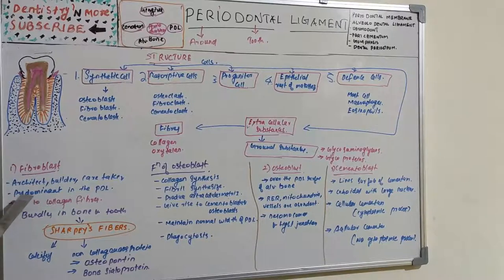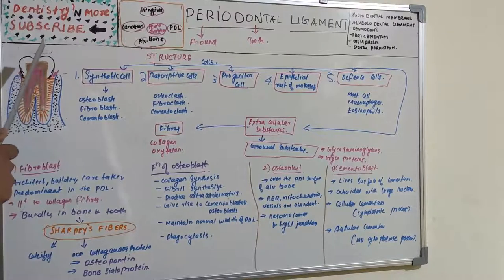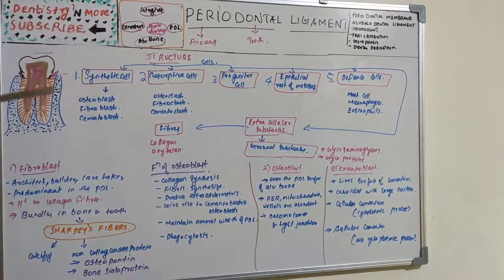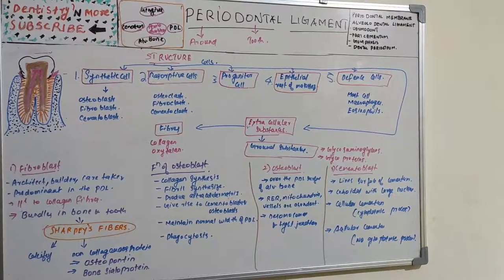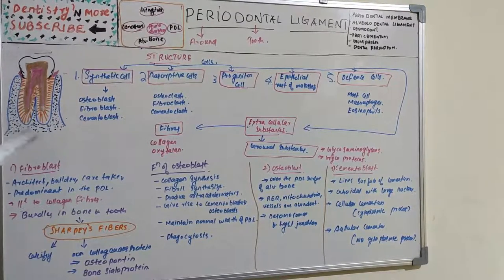These cells are oriented with their long axis parallel to the direction of collagen fibers, aligned along between collagen fibers, and their appearance is governed by the surrounding matrix. These fibroblasts of the periodontal ligament generate an organizational pattern as they have the ability to both synthesize and shape the proteins of the extracellular matrix.